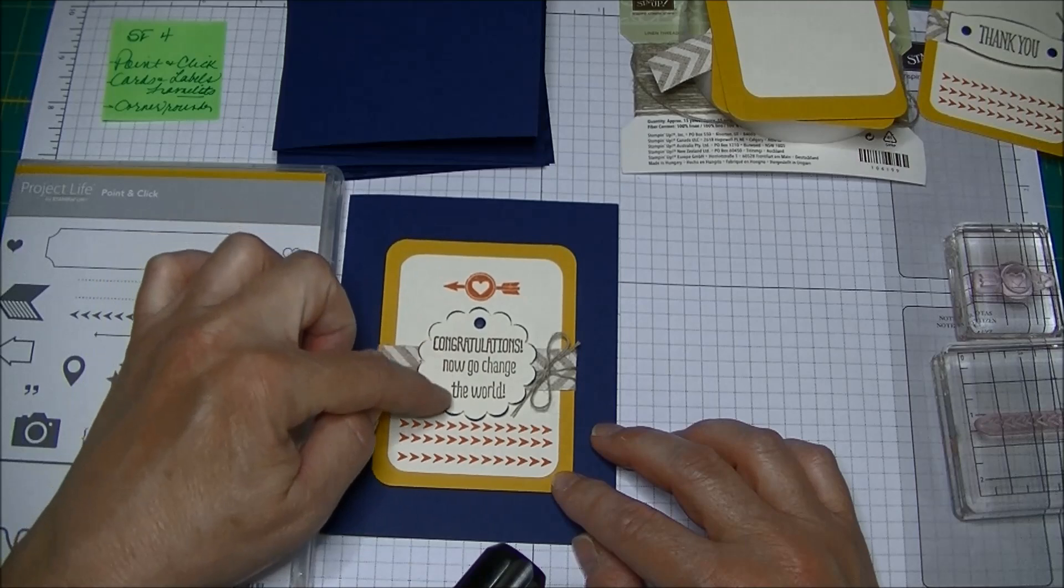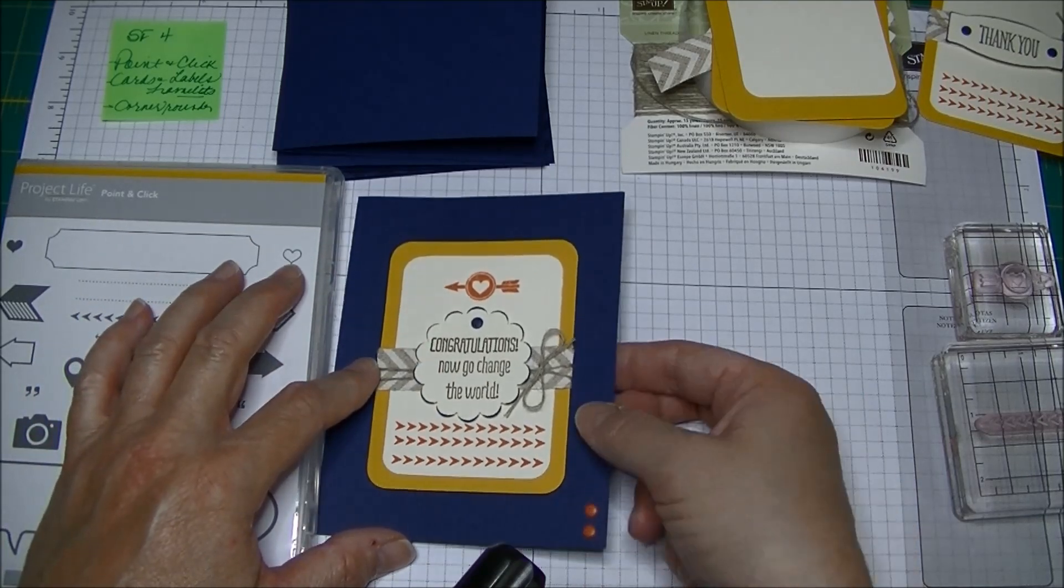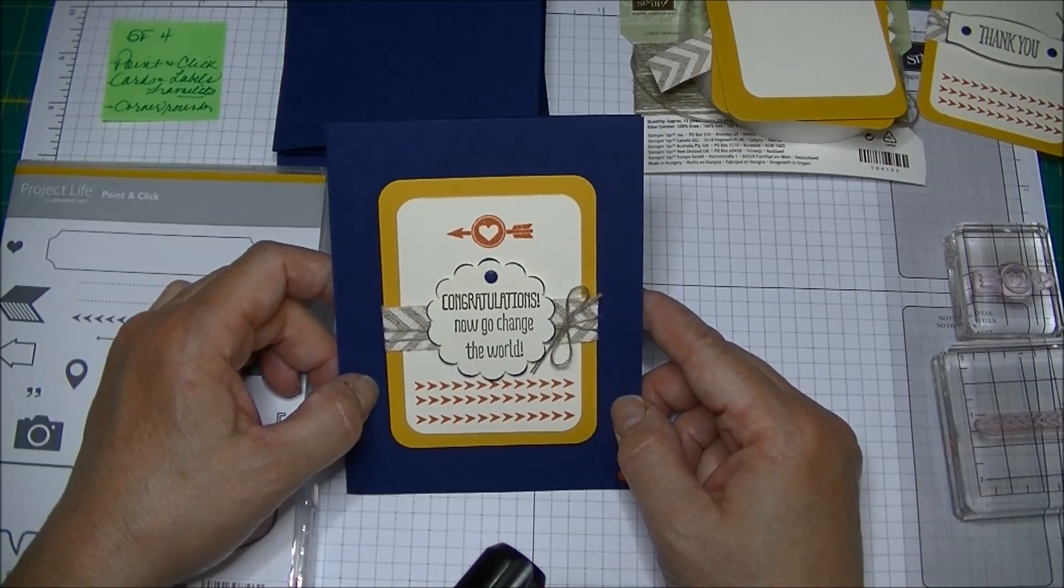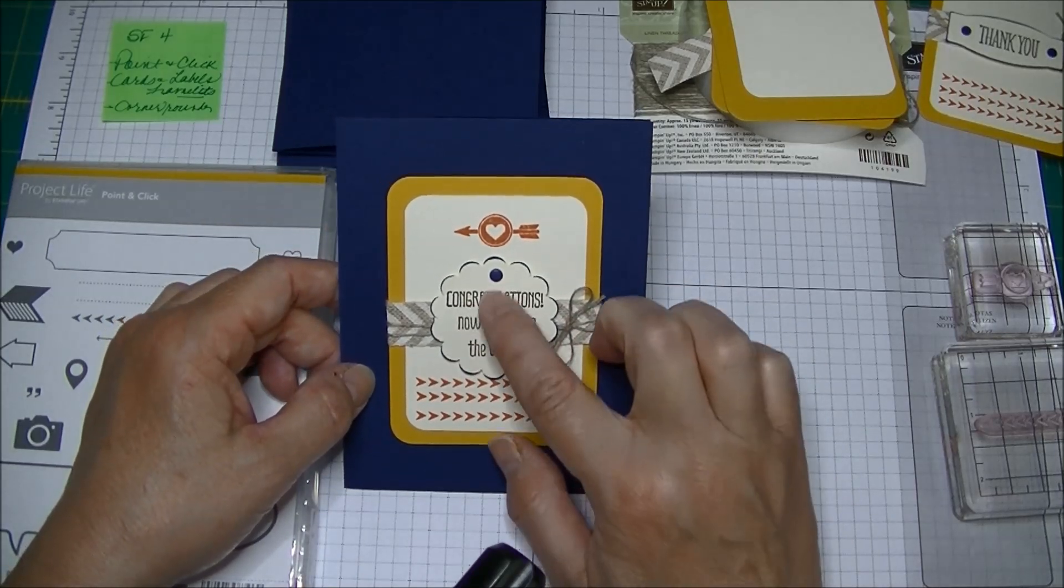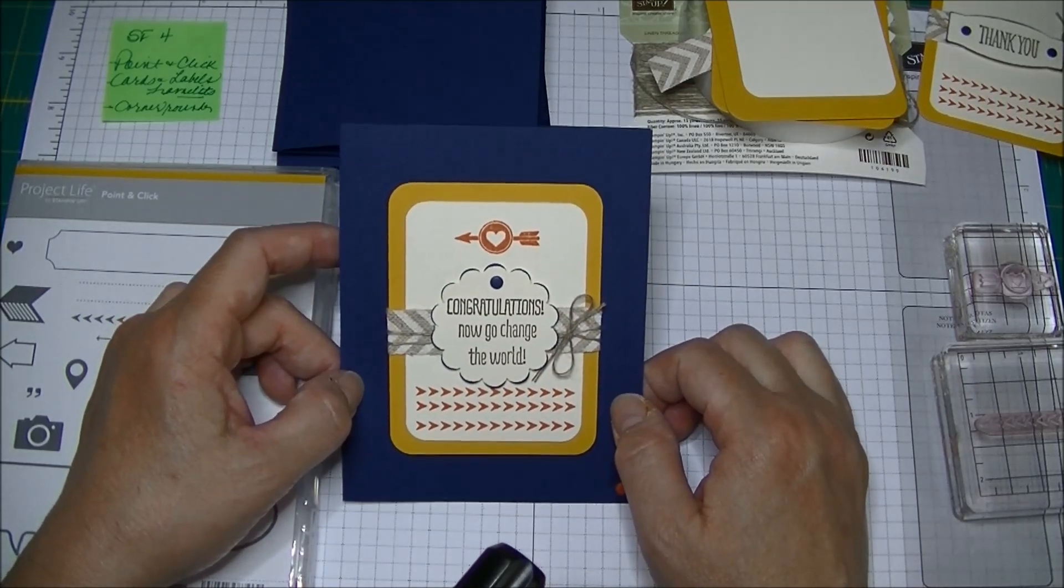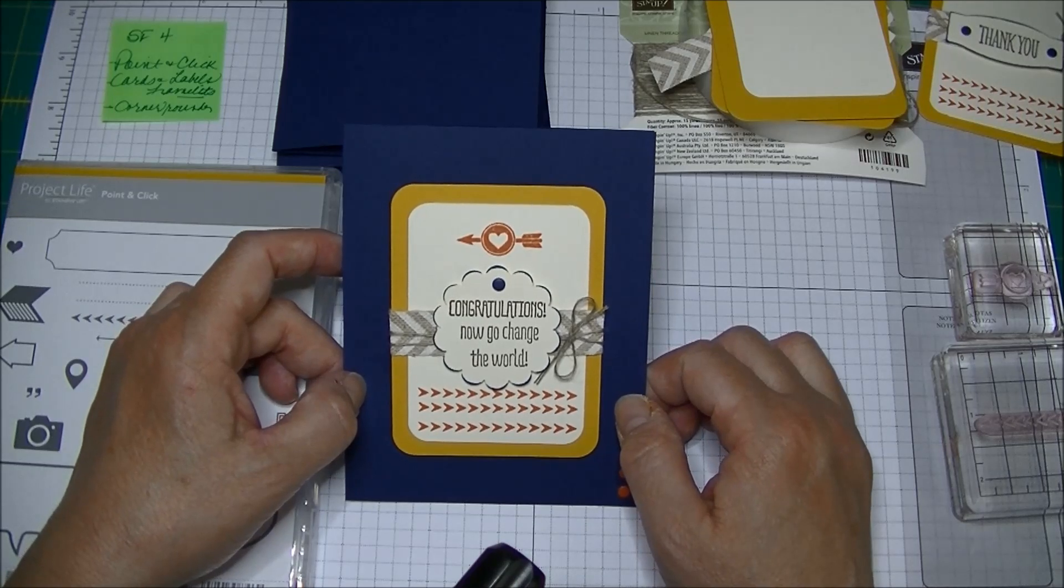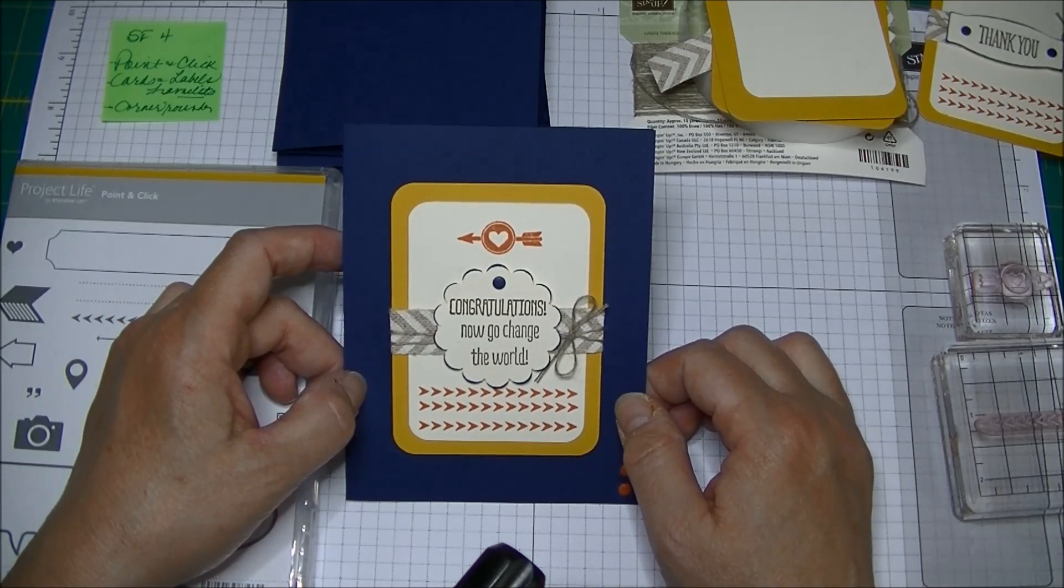The sentiments, this is actually two sentiment stamps, is a sneak peek at a stamp set called Something to Say. That's a sneak peek and these are two separate stamps. All the sentiments I'm using today are a sneak peek from that same stamp set.